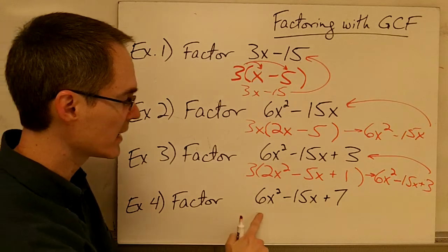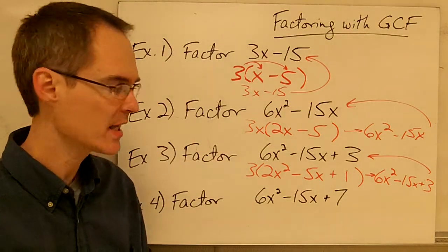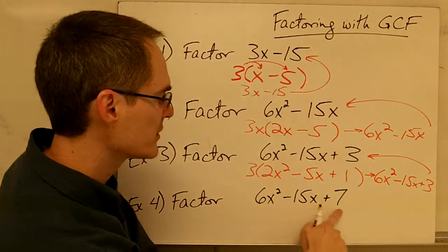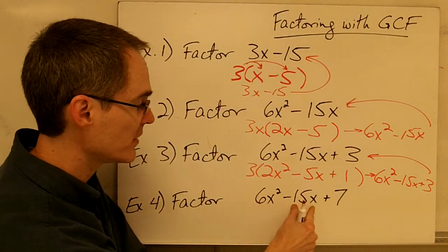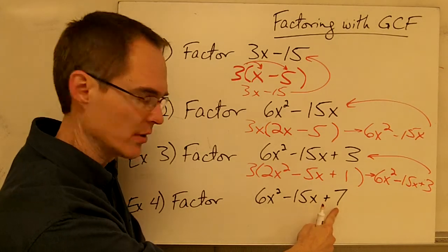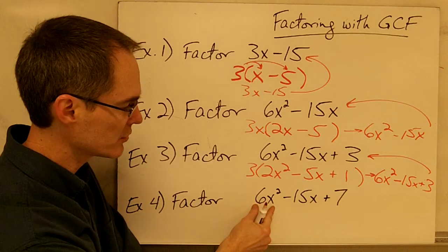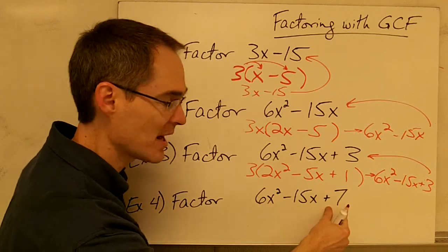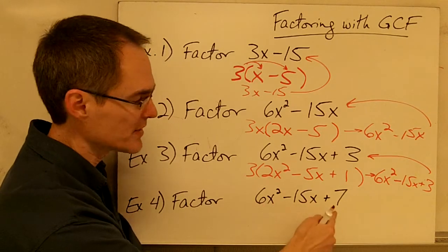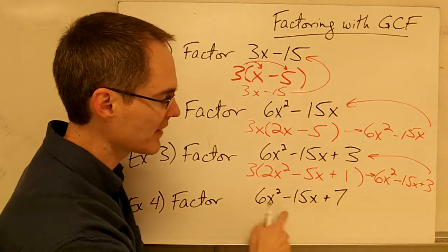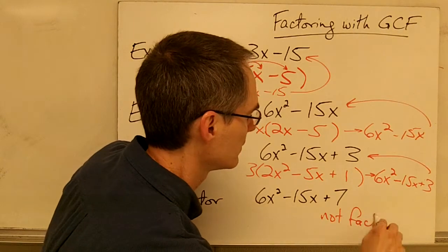Occasionally you get an expression where you can't pull out a greatest common factor. For this expression, I do have a common factor of 3x for the first and second terms, but I can't pull a 3x out of the last term. In fact, there is no factor that will divide evenly into 6x squared, negative 15x, and positive 7. Just because I could pull out a common factor from two of my terms doesn't mean I can factor the whole expression — if I can't pull it out of all terms, this expression is simply not factorable.